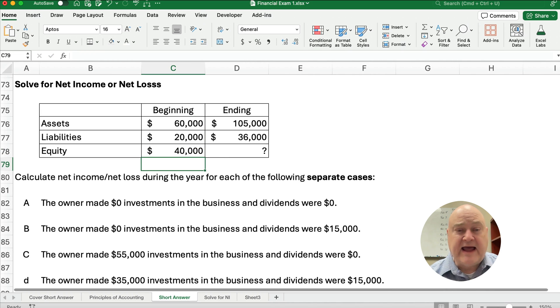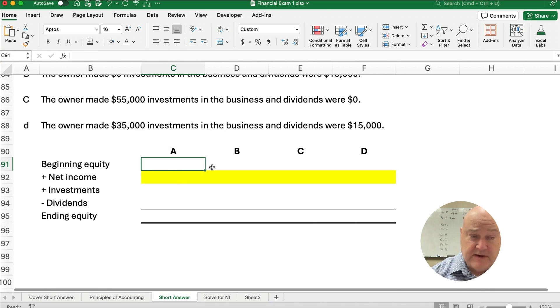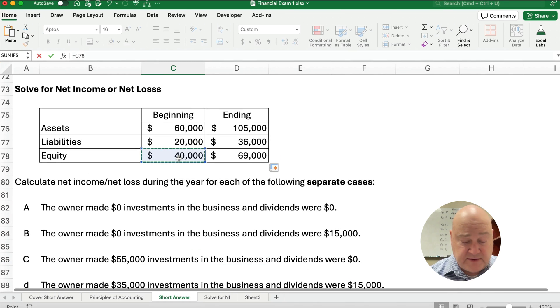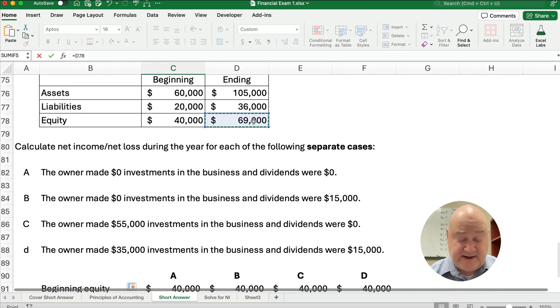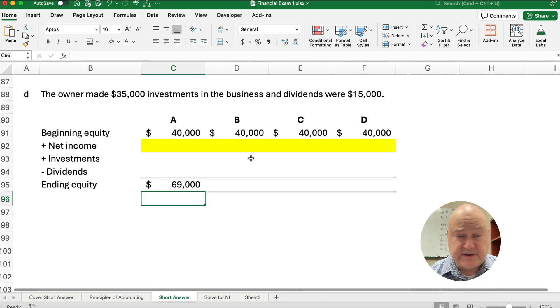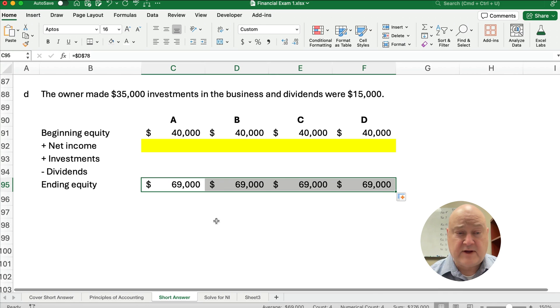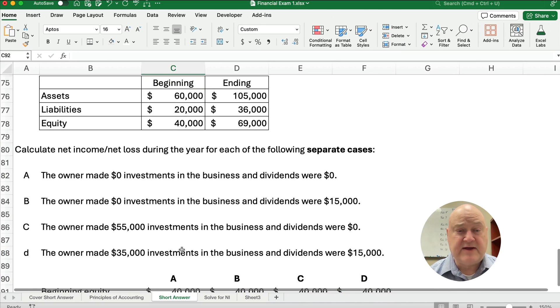Assets minus liabilities would give us equity, because we know the accounting equation is assets have to equal liabilities plus equity. So these two numbers have to equal the 60,000. So we can reverse it using algebra, and 60 minus the 20 equals 40. We can do the same thing for the ending. We can take 105 minus 36 gives us 69,000. So our equity is 40,000 for beginning. I'm going to point to the 40,000 and make it absolute here. So I can just copy it across. And so this is 40,000 every time. Now, ending equity is the same thing. Ending equity is going to be 69,000 in this case. I'm going to make it absolute with dollar signs so I can just copy this across. So it's 69,000 all the way across. So all we're doing is we're changing the investments and the dividends and solving for net income.